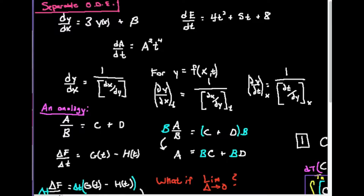So what is a differential equation? A differential equation is an equation with a derivative in it. For example, if I look at the derivative of E with respect to T — that's actually the derivative of energy with respect to time — it's equal to 4T² + 5T + 8. I have this expression in terms of a derivative. Whether it's a first derivative or a second derivative, it's going to be a differential equation.